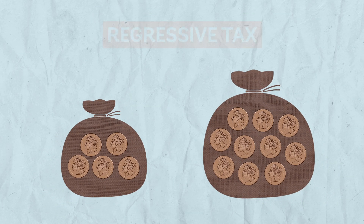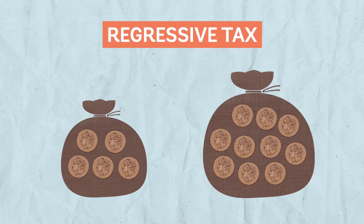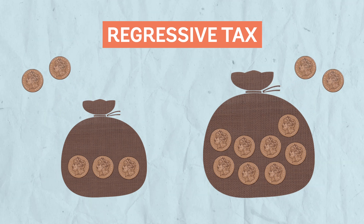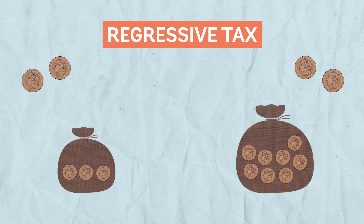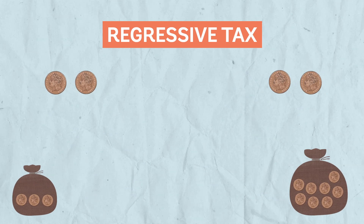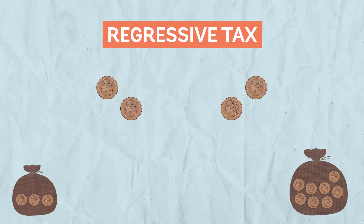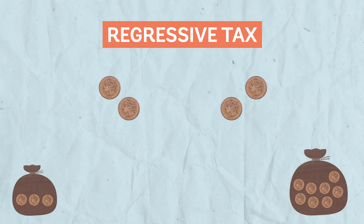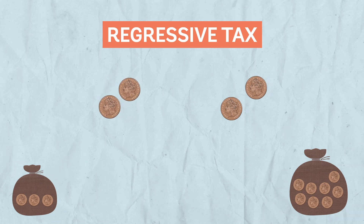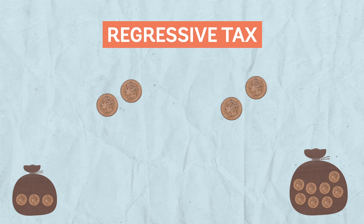They are regressive if the poor pay a larger share of their income in taxes. For example, if a poor person pays $10 in sales tax, this will represent a higher share of her budget than if a rich person pays the same $10.